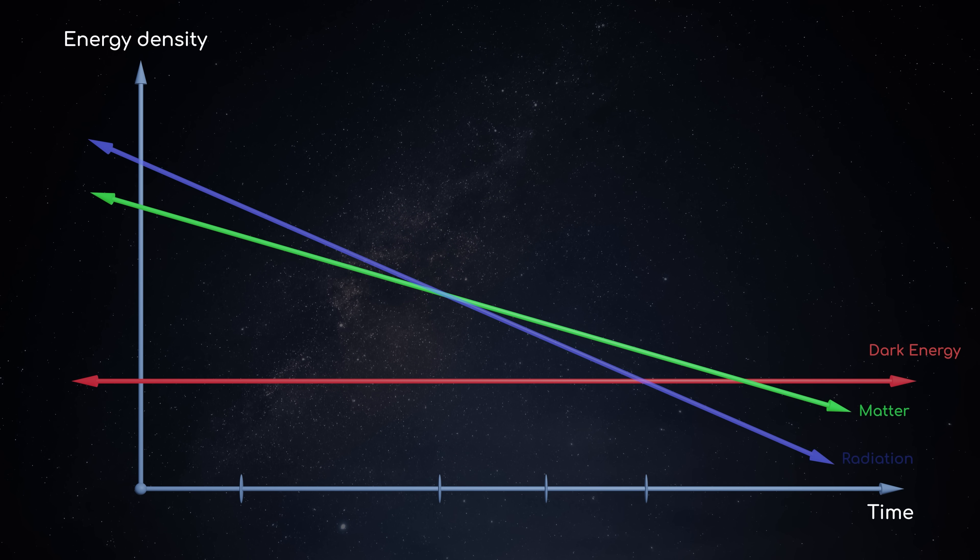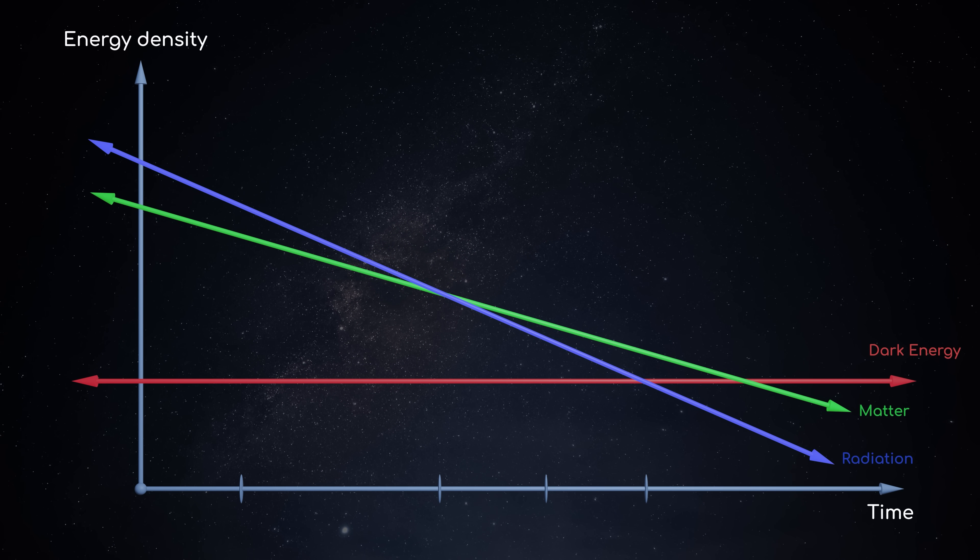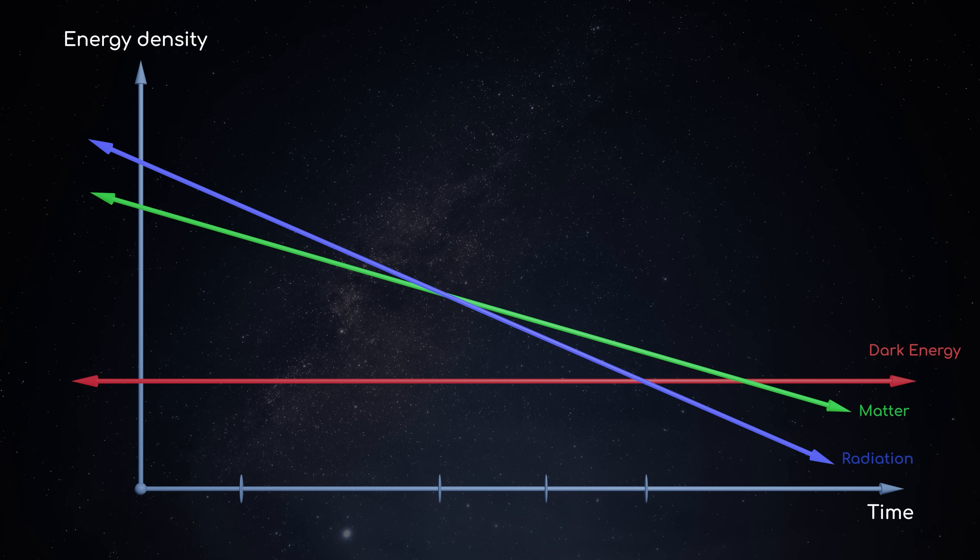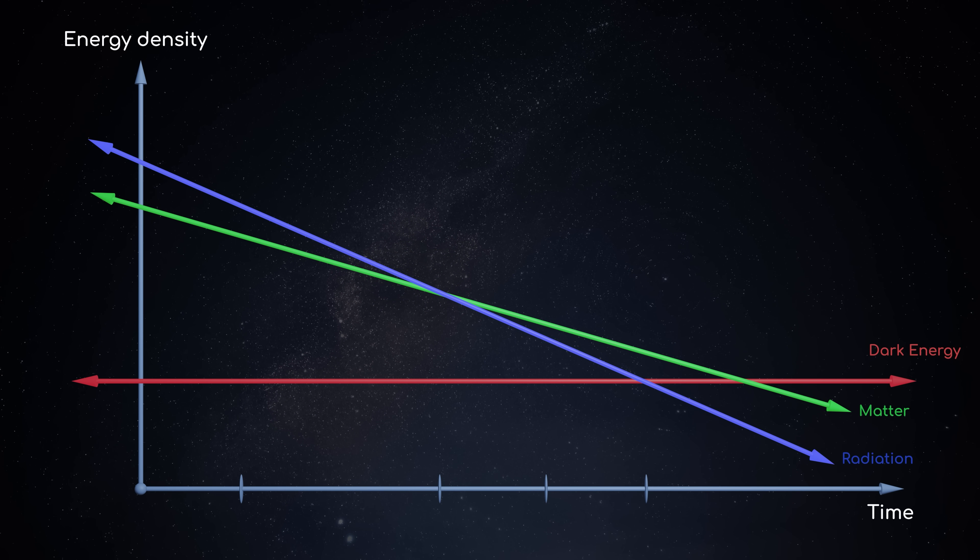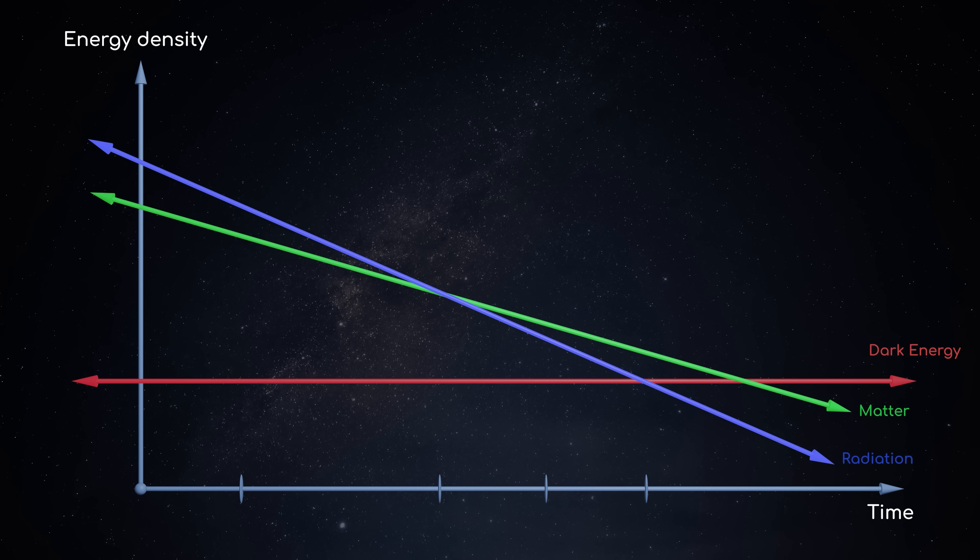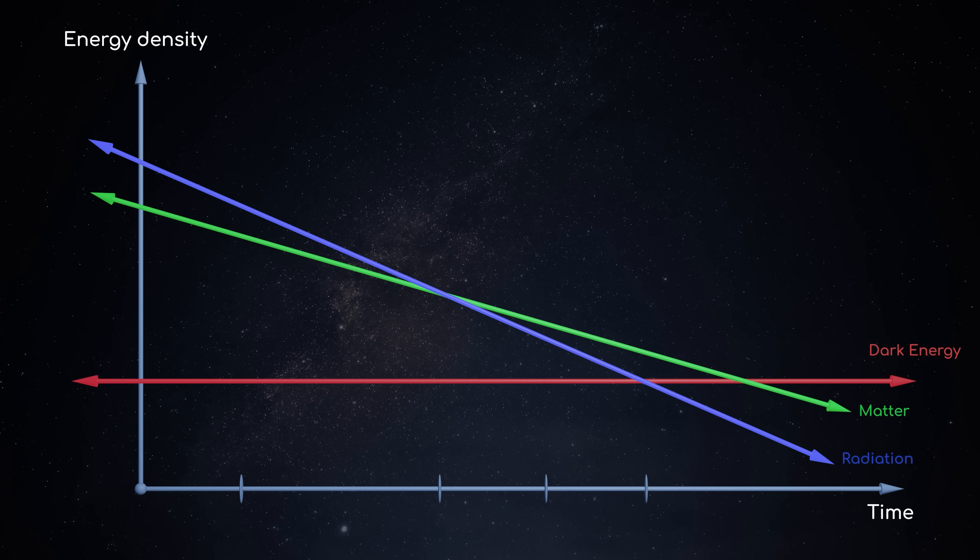Finally, this is the density of radiation in the universe, including photons and other extremely light particles. The positive pressure of radiation makes it dilute away even more quickly than ordinary matter.